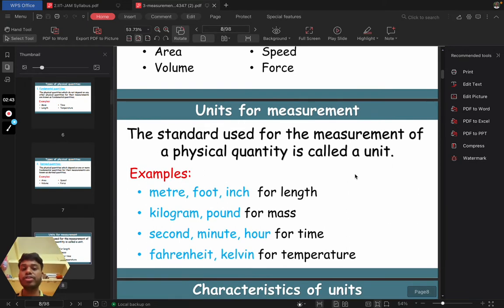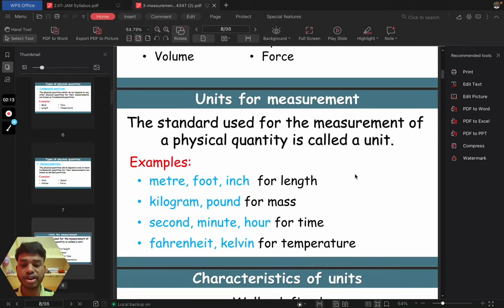Now there are units for measurement. What is a unit? It is a standard basically, which is used for the measurement of a physical quantity. For example, we can say like for length we use meter, foot, inch. These are units. For mass we use kilogram, pound, etc. These all are units of mass. Similarly, second, minute are for time and Fahrenheit, kelvin for temperature.